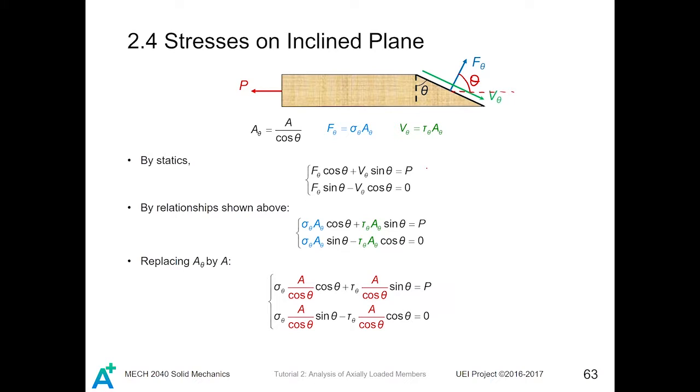Now, consider the horizontal direction. The left-hand load P equals F theta cosine theta plus V theta sine theta. Besides, consider the vertical direction: F theta sine theta minus V theta cosine theta equals zero. Then, we substitute those two equations into the system such that this system has two unknowns: sigma theta and tau theta. Those two are the unknowns that we are going to solve.